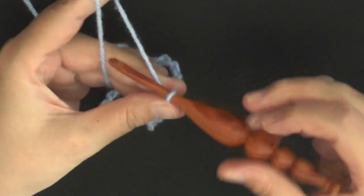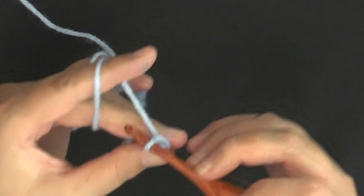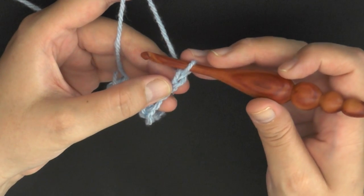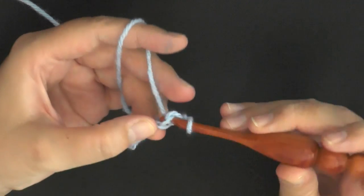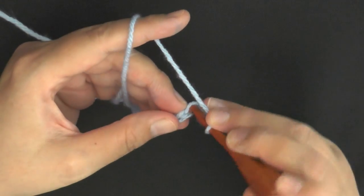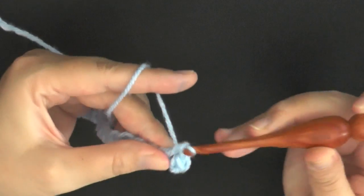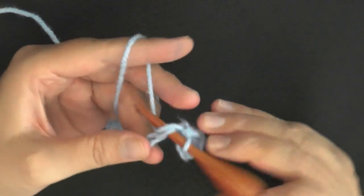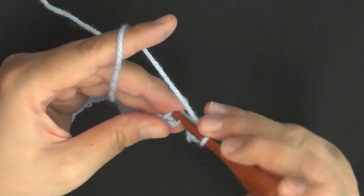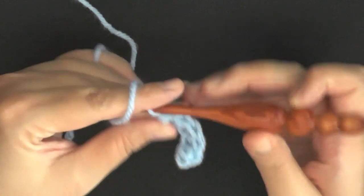I'm going to go ahead and chain my plus 1, and then in the second chain from the hook, one, two, you'll want to put a single crochet. Then you'll want to put a single crochet in each chain down your chain. Continue to do that and I'll see you when you get done.